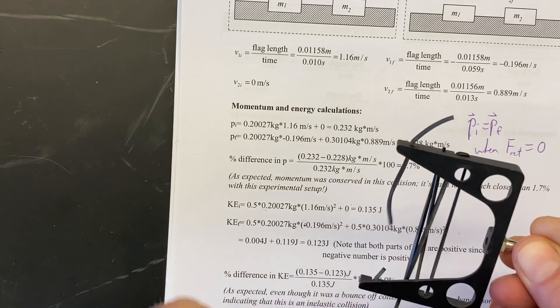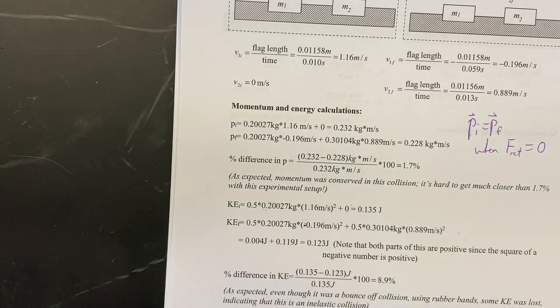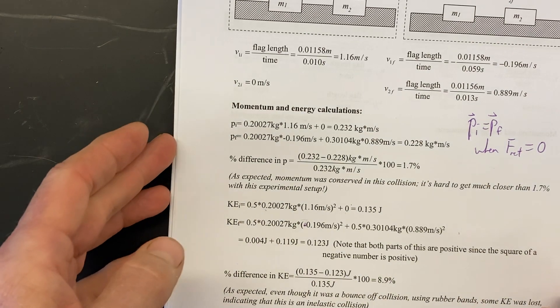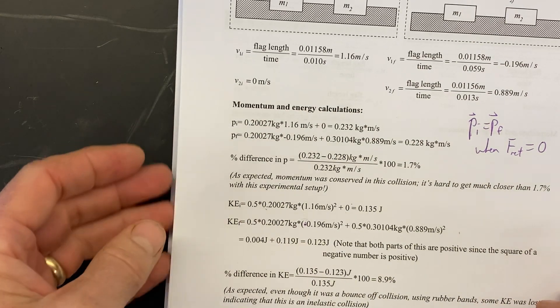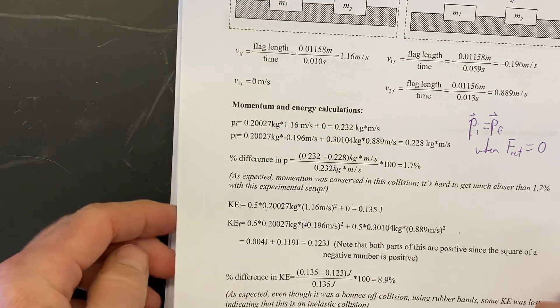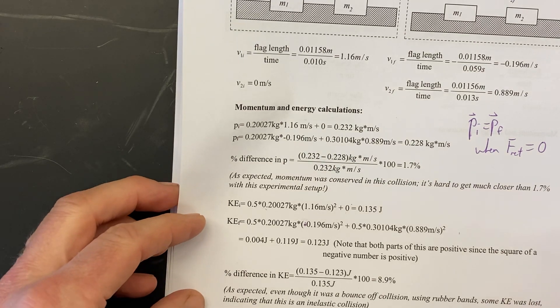Now even though we were using these rubber bouncers, these rubber bands for the bouncers, it was still not an elastic collision. We still lost almost ten percent of the kinetic energy. Now that's not too much but we could do this over and over and we're not going to get it to be zero. We're not going to get it to be one percent.